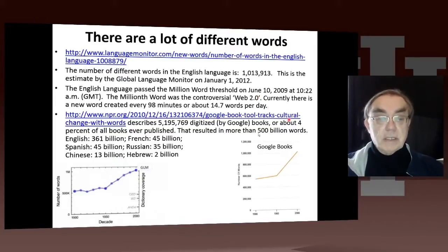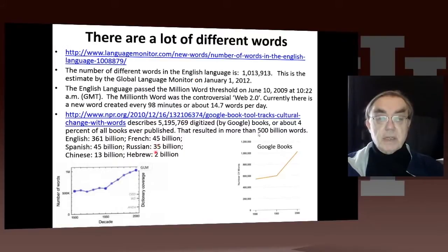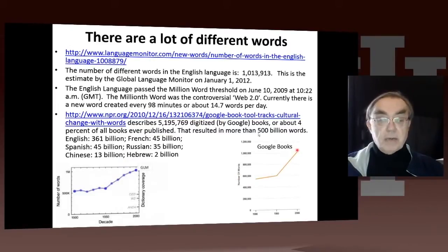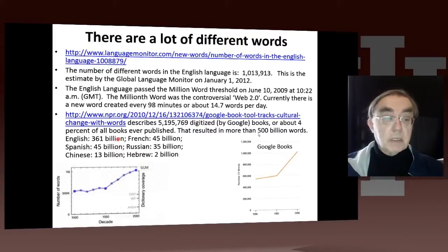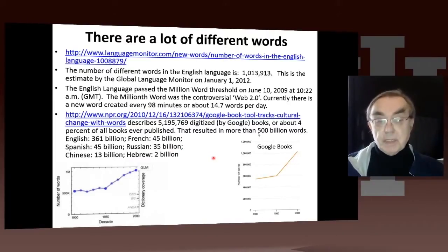Currently a new word is created every 98 minutes. Here's another survey looking at books digitized by Google. We're up to around a million words here from Google Books, and here's the other survey also at a million. The Oxford English Dictionary is actually less than 500,000 — it has higher standards. Notice the total number of words in this Google digitization for English was 361 billion, and not so many in some of the other languages, but the total was around 500 billion. Big numbers — big data.